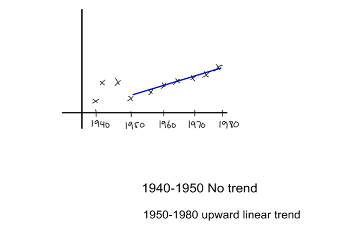In this graph, we see that between 1940 and 1950, there is no trend in the data. However, from 1950 to 1980, there is an upward linear trend.